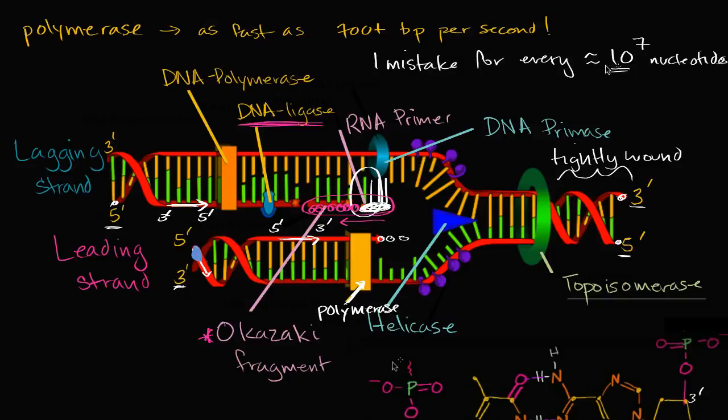And that might seem pretty accurate, but you gotta remember, we have billions of nucleotides in our DNA, so this would still introduce a lot of errors. But then there's proofreading that goes back and makes sure that those errors don't stick around. And so, once all the proofreading takes place, it actually becomes one mistake for every approximately 10 to the 9th nucleotides.